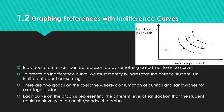To create indifference curves, we identify the bundles that the college student is indifferent about consuming — his sandwiches per week from Subway and his burritos per week from Chipotle. These are two goods on the axes: on the y-axis you have sandwiches, and on the x-axis you have burritos per week, representing the weekly consumption of both goods.